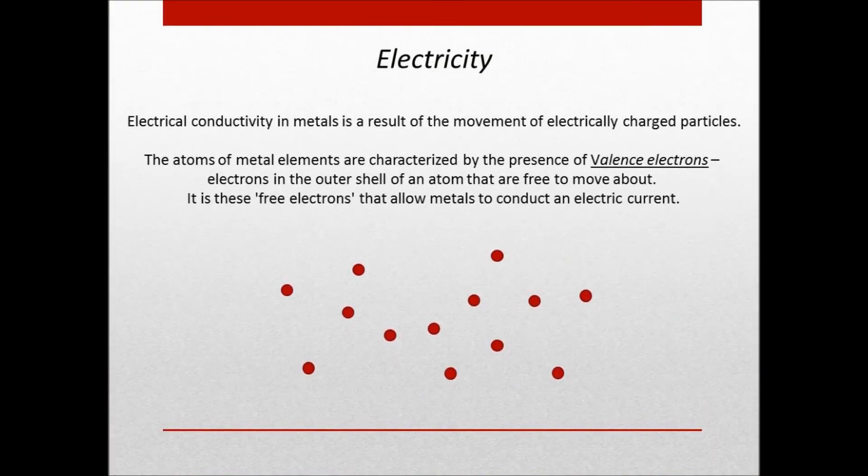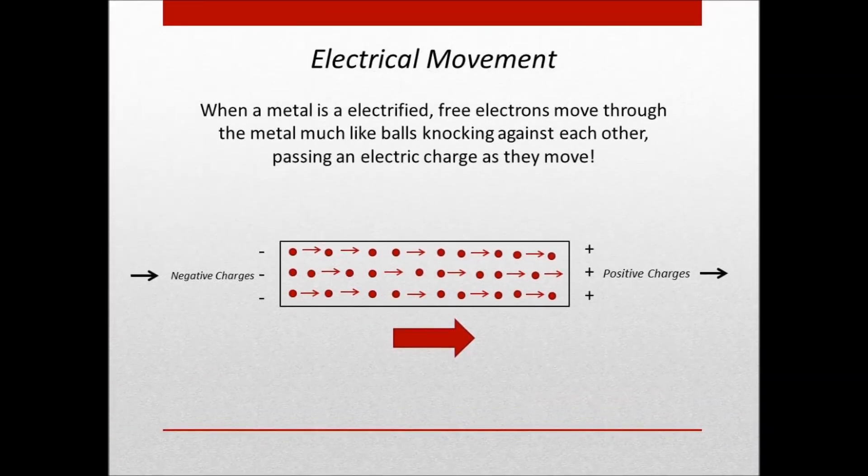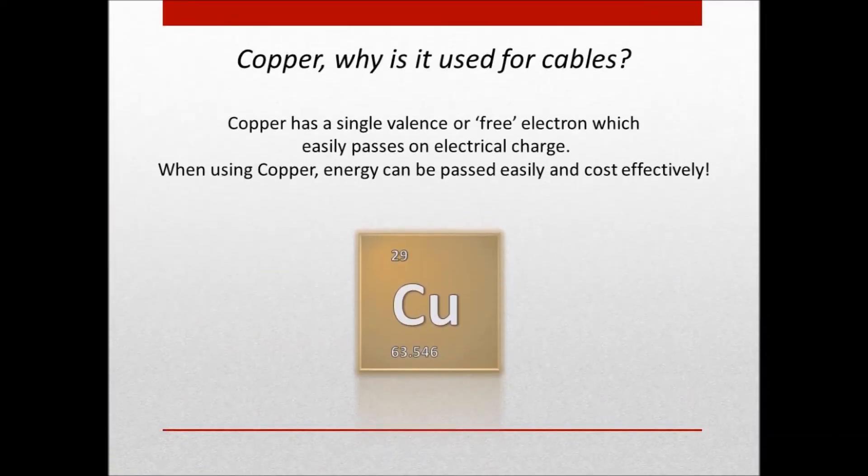Metal elements are characterized by free electrons in the outer shells of the atom. It is these free electrons that move about and create and conduct the electric flow of energy. Copper has one single valence electron in the outer shell, thus making electrical transmission more effective than other metals.